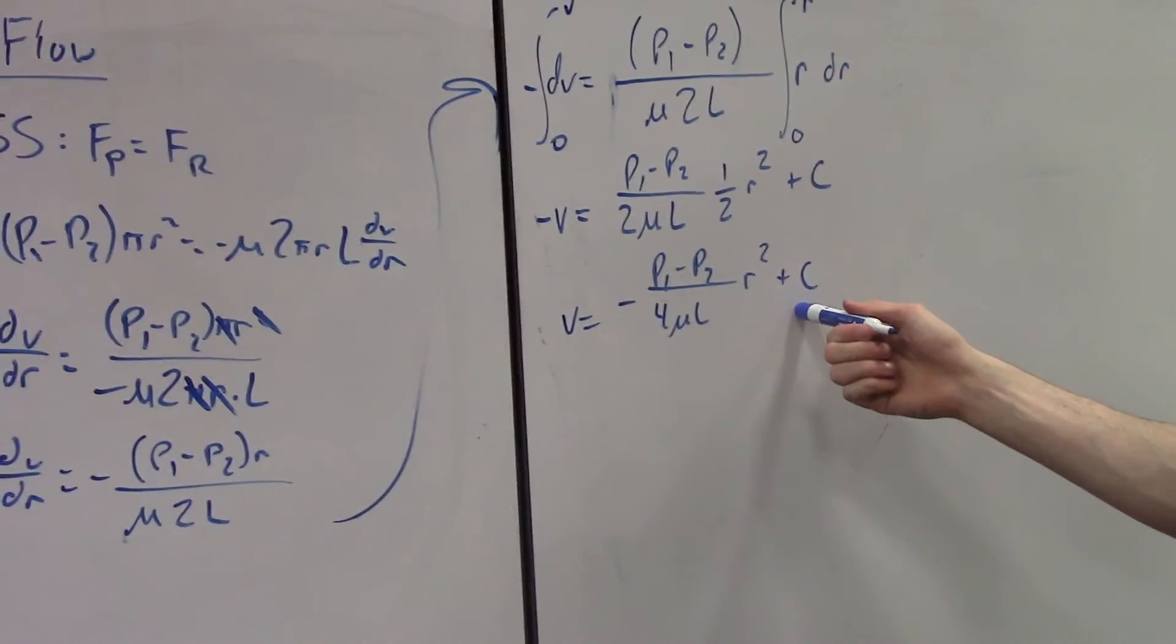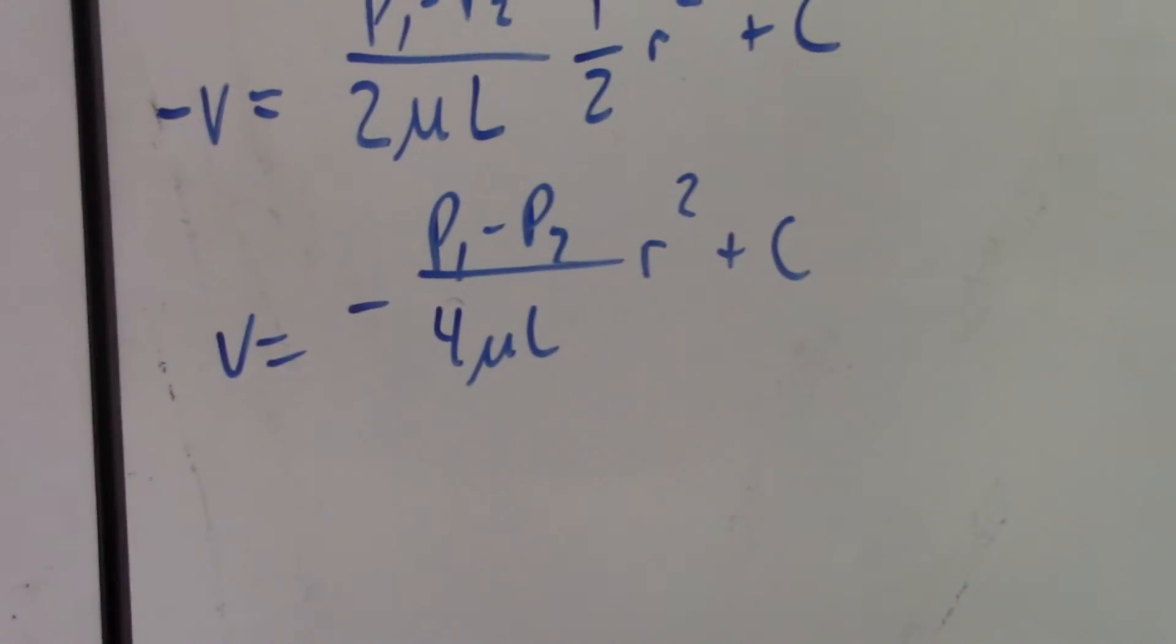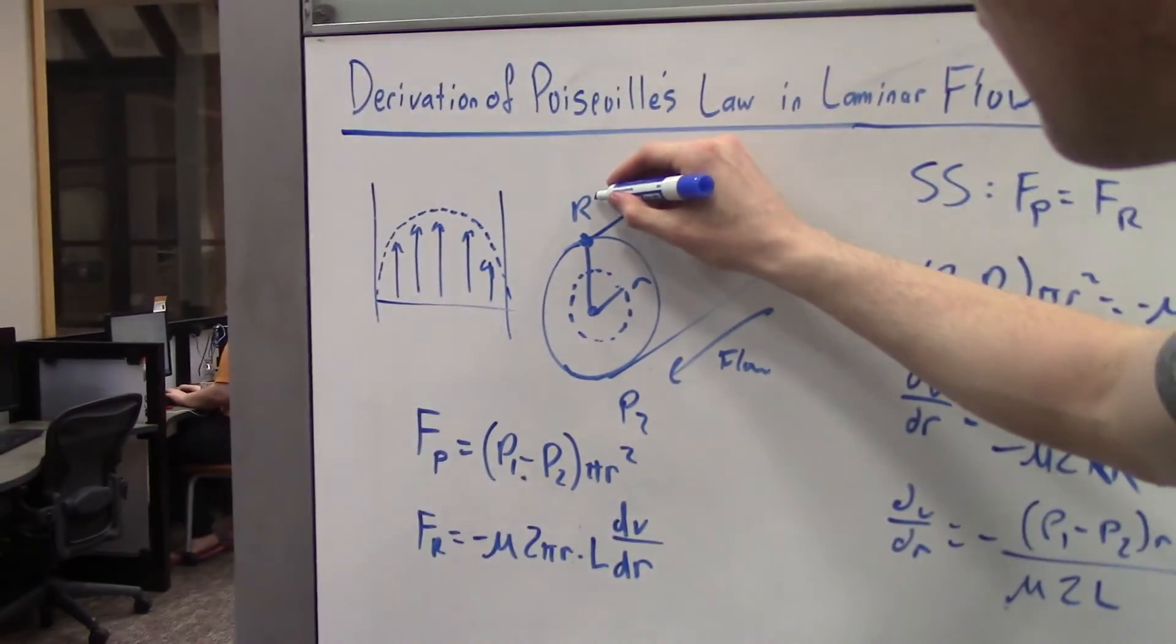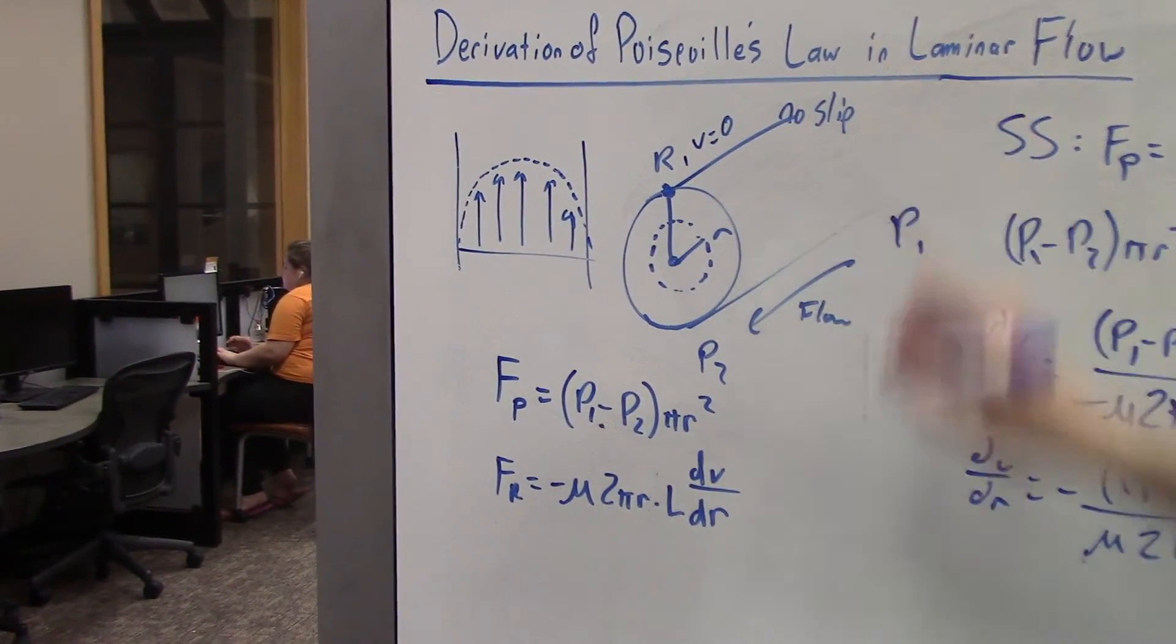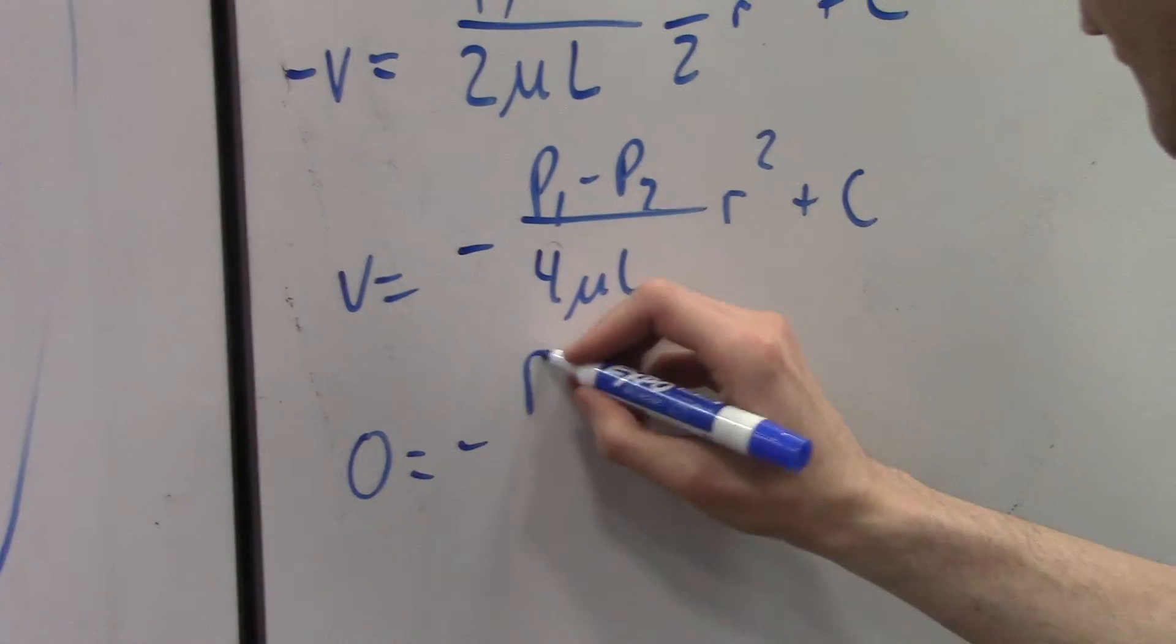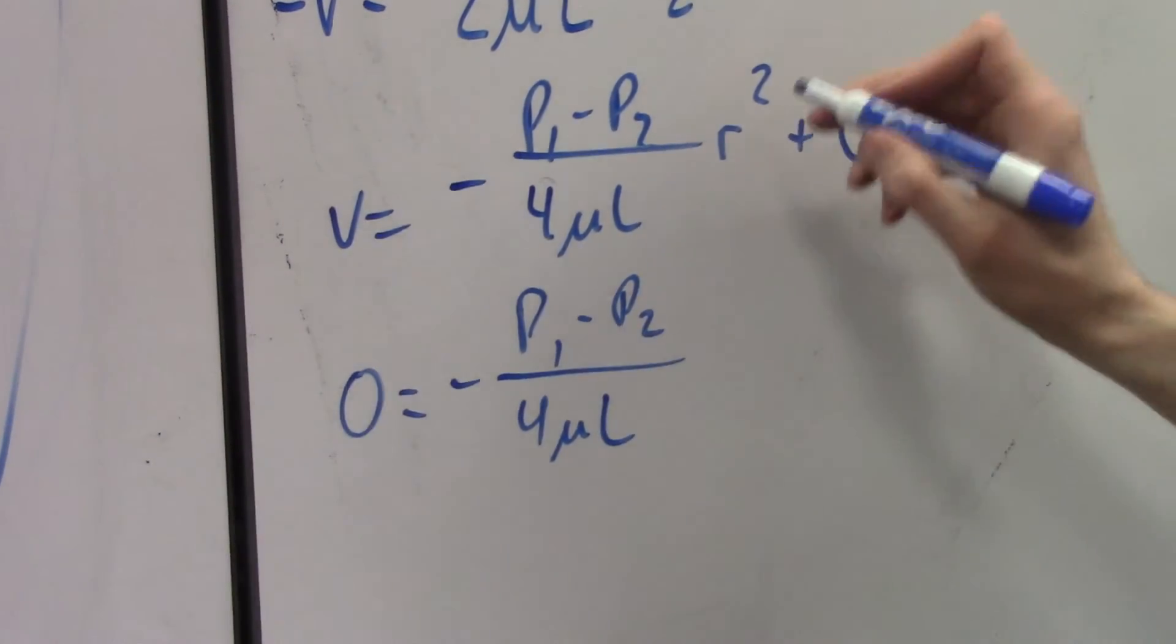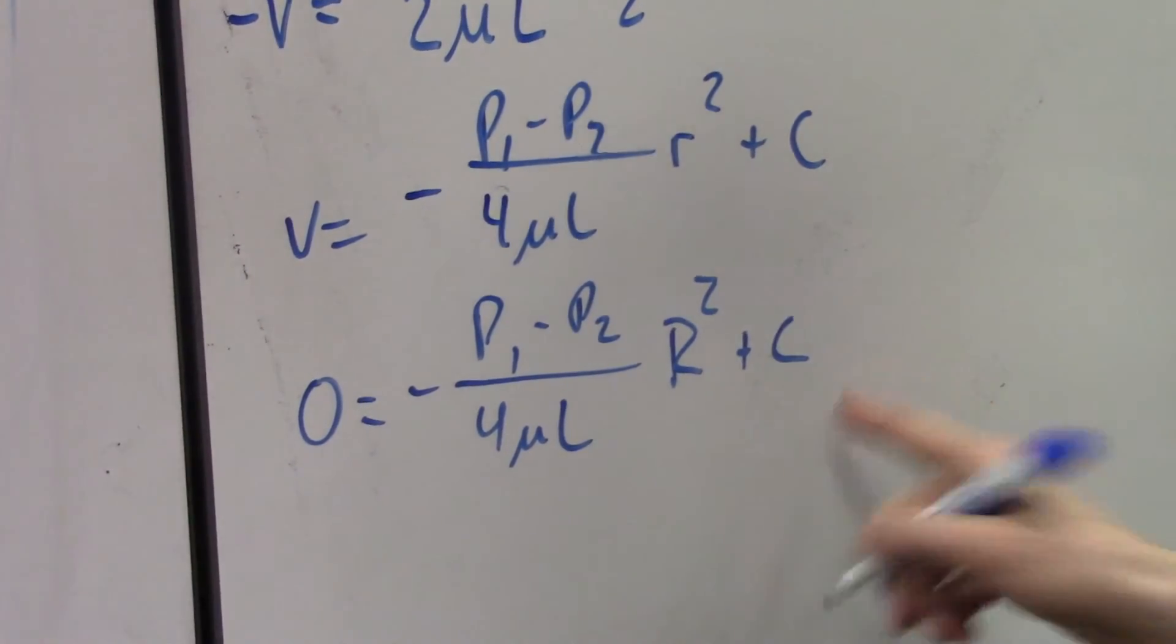Now how do we solve for the C right here? We have an initial condition at the big R against the wall, the velocity is 0. Velocity equals 0 because of no slip condition. So we'll use that to solve for C. So we'll input 0 equals negative P1 minus P2 over 4 viscosity L big R squared plus C, and we'll solve for C.